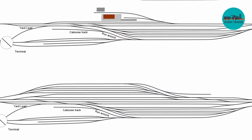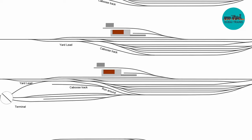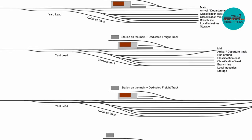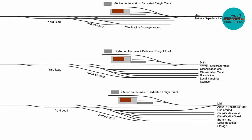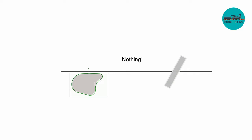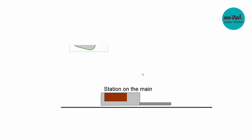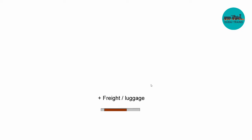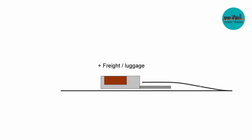Now you know about the different types of yards, what classification means, and why you have to do it. Let's have a look at some track work — this is where it gets fun. To understand every function of every piece of track, we'll build it up slowly. Starting with the smallest possible station: here is a main line and there is nothing, because back in the old days a train would even stop at a road crossing to unload cars.